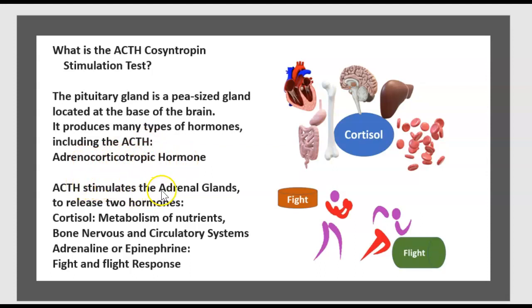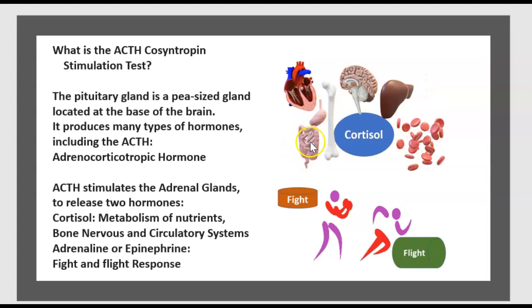ACTH stimulates the adrenal gland to release cortisol, which affects the metabolism of nutrients, bone, nervous system, and circulatory system — including the heart, the liver, and the digestive tract.